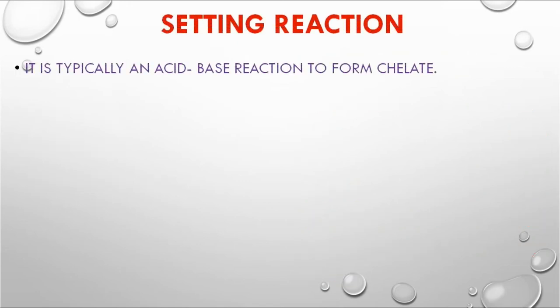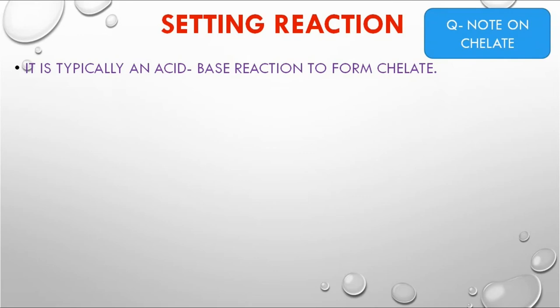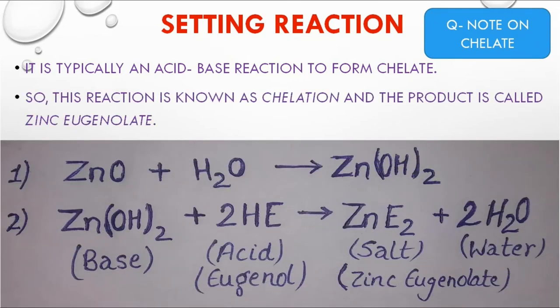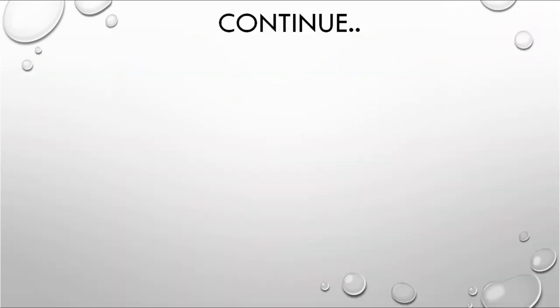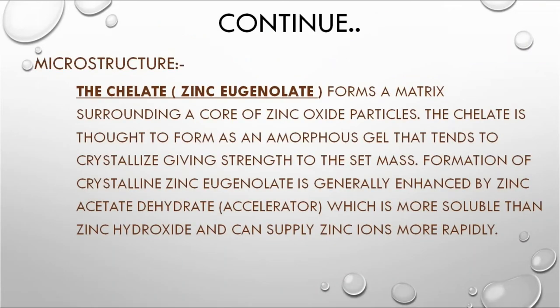Setting reaction of ZOE is called chelation — it is an acid-base reaction to form a chelate. The product is called zinc eugenolate, a chelate that forms a matrix surrounding a core of zinc oxide particles as an amorphous gel that tends to crystallize, giving strength to the set mass. Zinc acetate dihydrate acts as an accelerator as it is more soluble than zinc hydroxide and can supply zinc ions more rapidly.